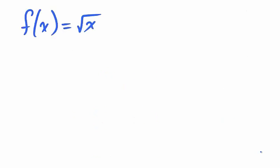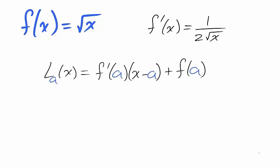Take the example of the square root function. We can find the linearization by first finding the derivative. For any x value a in which f is differentiable, we can find the linearization of the square root function.